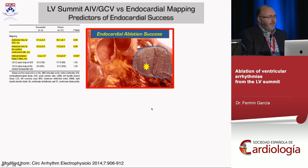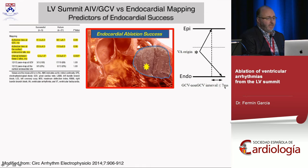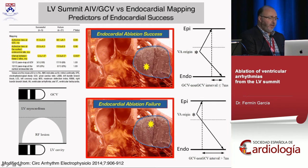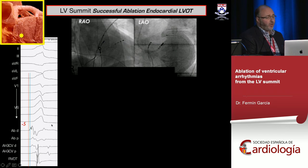This approach was described by the Stevenson group: they measure endo and epi activation from the great cardiac vein and endocardium. If the arrhythmia origin is closer to the endocardium, the interval between the two points is less than seven milliseconds — and applying a lesion from the endo can work. But if the origin is closer to the epi, this distance exceeds seven milliseconds, the wall is too thick, and the endocardial lesion will fail.